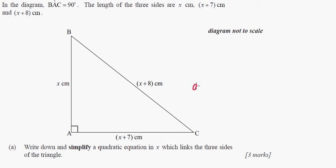Now remember, Pythagoras is a² + b² = c². Any right triangle, you can find the sides that way. So it says write down and simplify a quadratic equation in x which links the three sides of the triangle. So that's just going to be x² + (x+7)² = (x+8)².